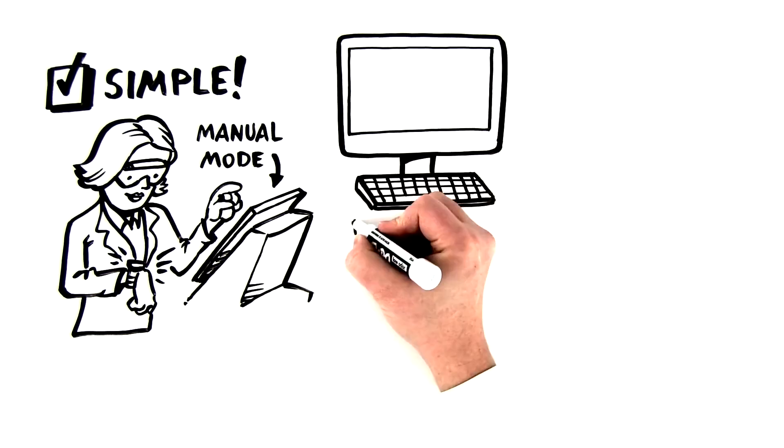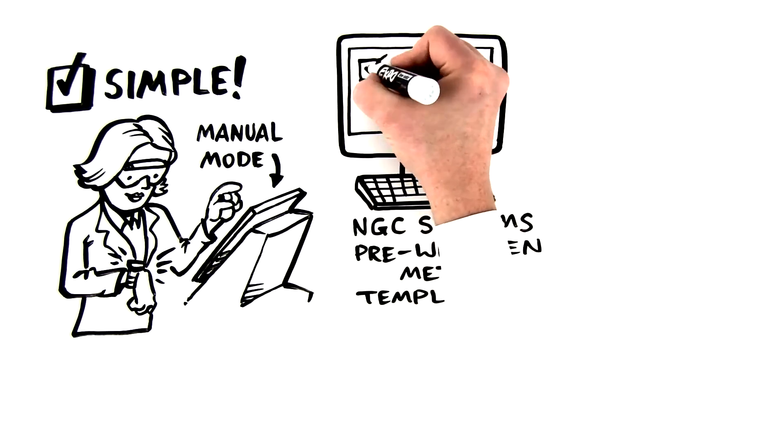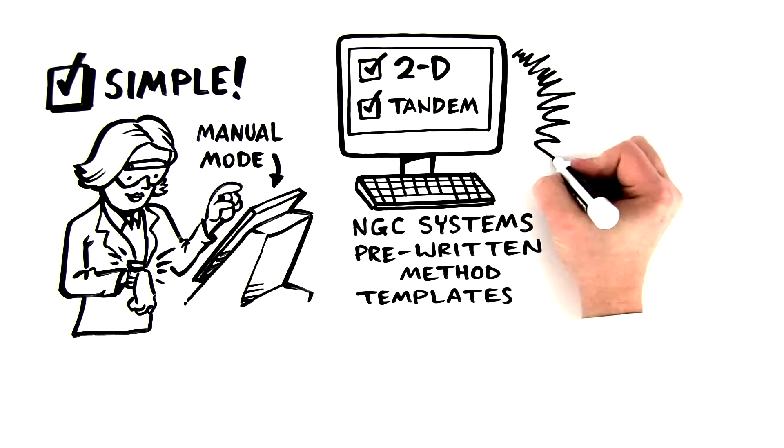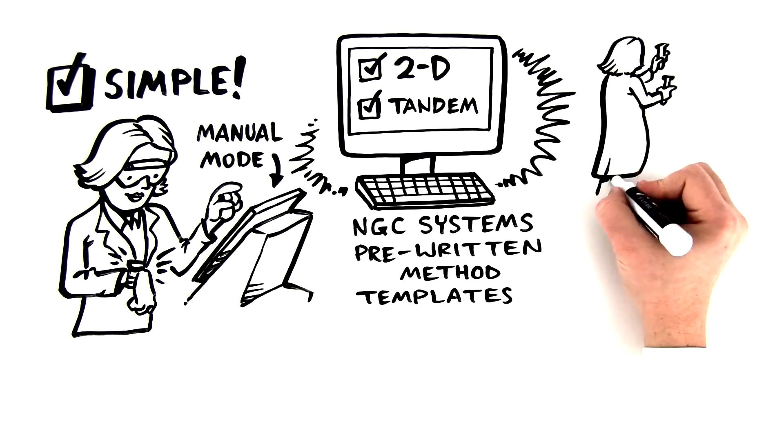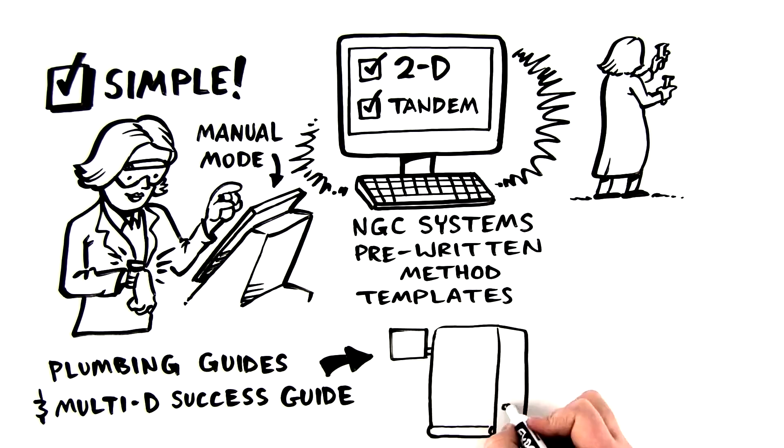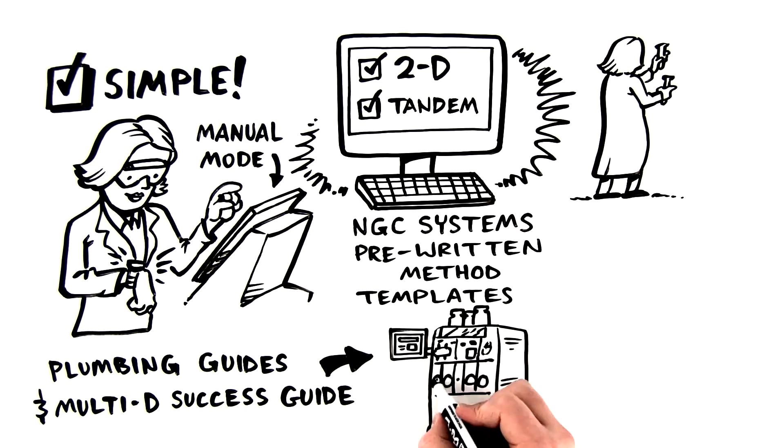the NGC system comes with pre-written method templates for common 2D and tandem purification techniques. In addition, easy-to-follow plumbing guides and the Multi-D success guide provide everything needed to set up the system yourself.